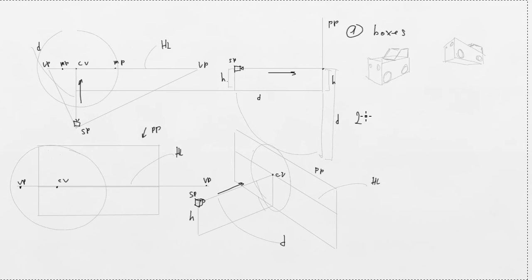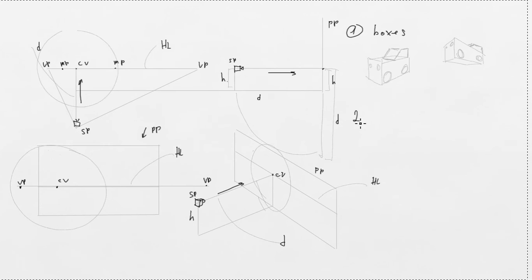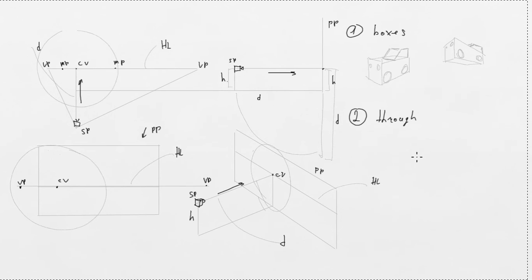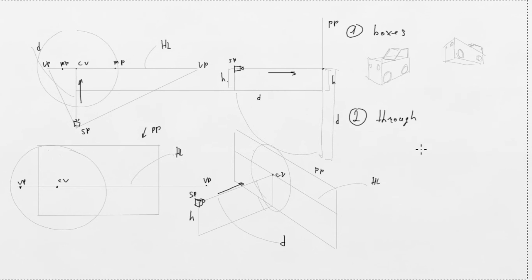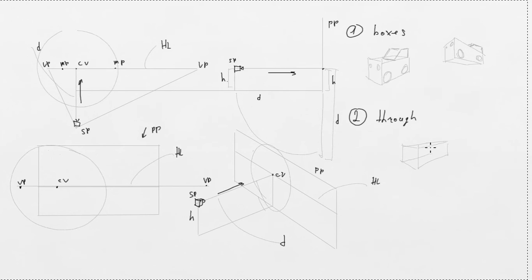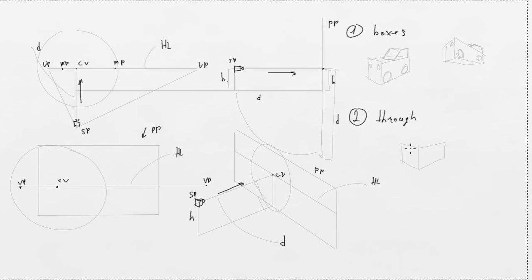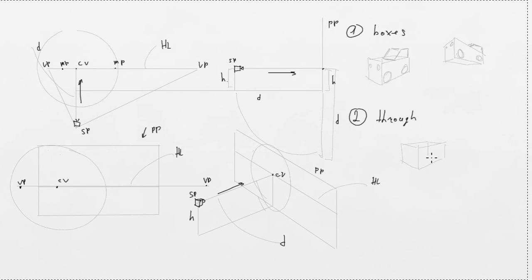The next idea is drawing through. Drawing through means that you're not just drawing the external corners of a box, but also drawing the internal corners — so that you can see it as transparent, like a wireframe in a 3D program. This is very useful when drawing a curved shape at the bottom.